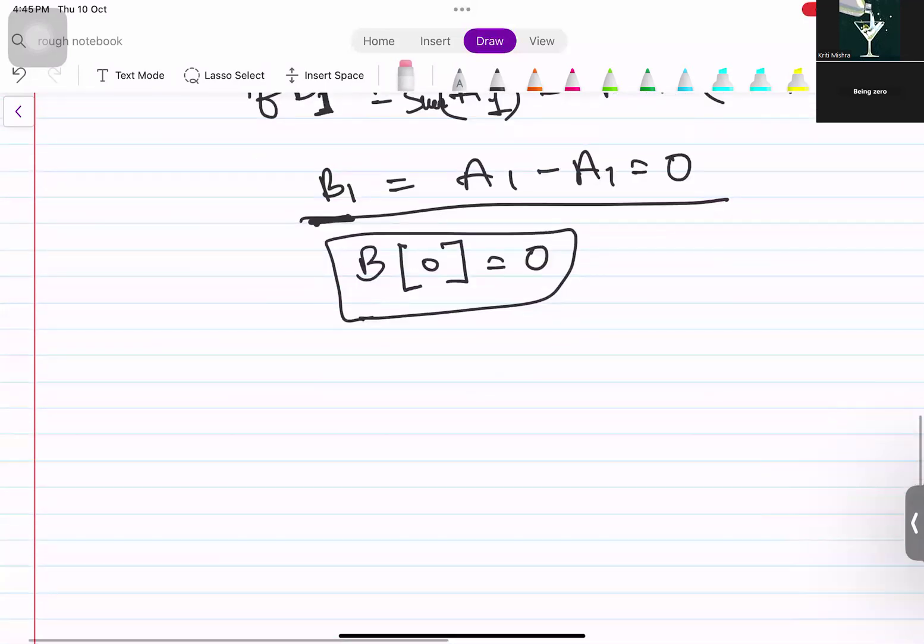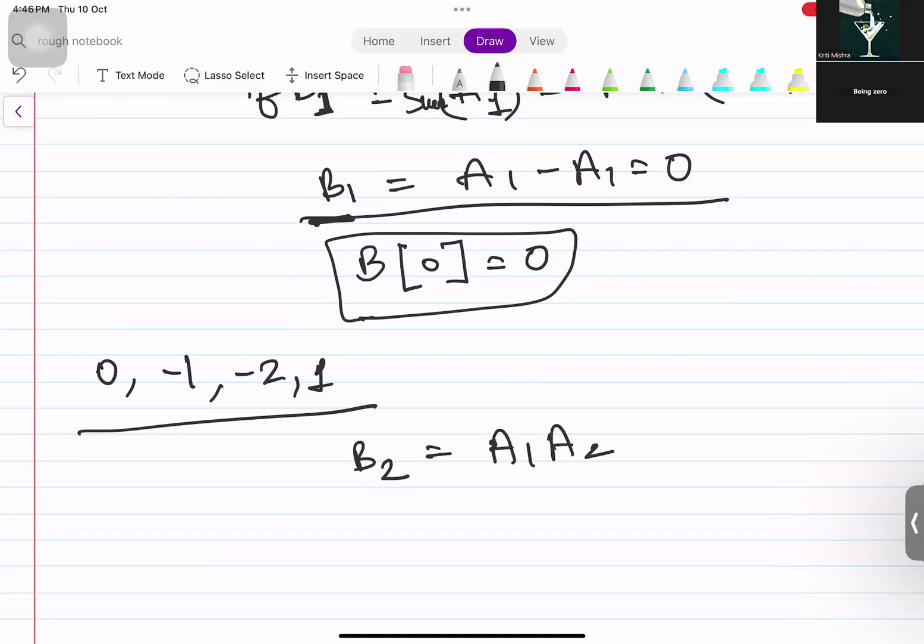In the given test cases also, the second test case that the question is providing us, that too contains B at 0th position as 0. So how can we find out A? Similarly, if we do for B2, sum till A1 plus A2 minus max sum of A1. How can we get it? If A1 is always 0, then A1 can be any value. We cannot take 0, maybe we can take 0. A1 can be any value.